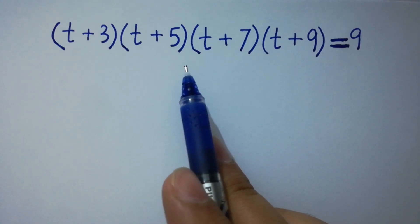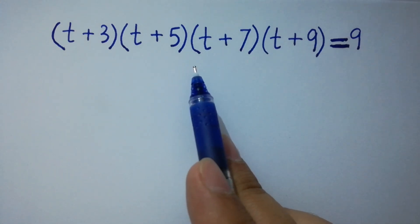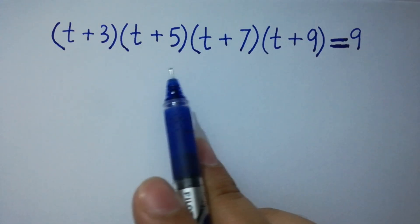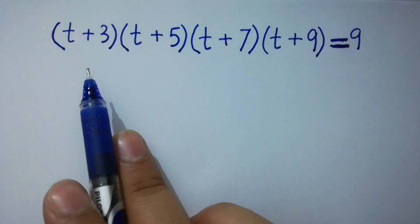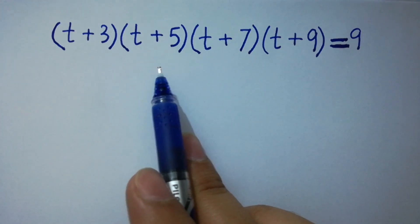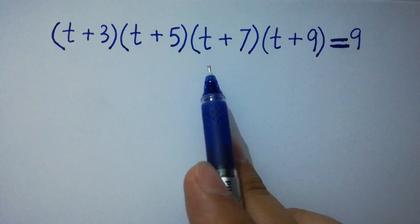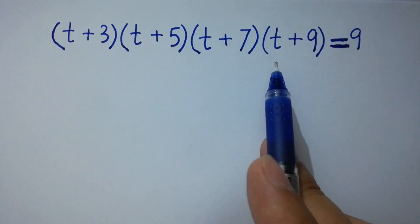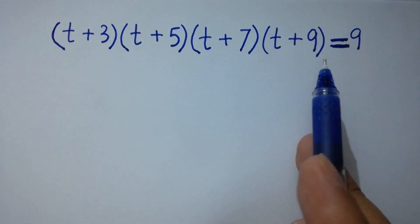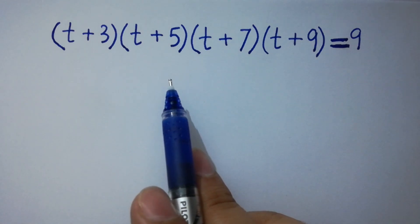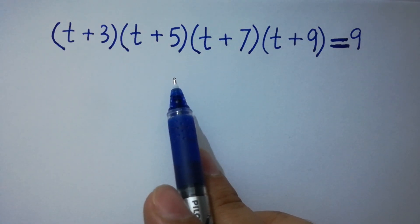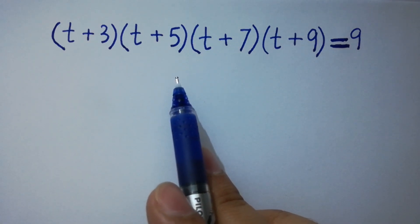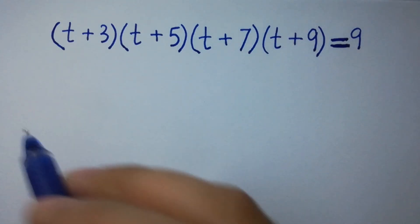Hello friends, find the value of t from a nice problem: (t+3)(t+5)(t+7)(t+9) = 9. I am going to solve this problem without expanding. Let's have a solution.